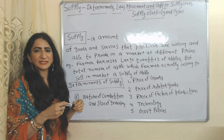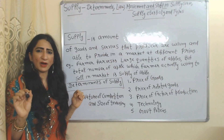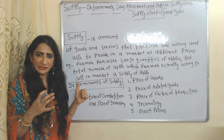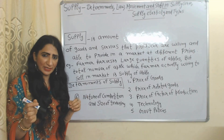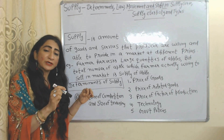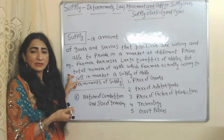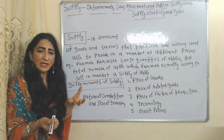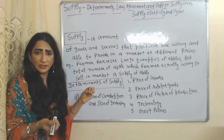Hello everyone, my name is Minnie Sati. Today we are going to talk about everything about supply. Supply is the amount of goods and services that a producer is willing and able to provide in the market at different prices. For example, farmers harvest large quantities of apples, but the amount of apples they are actually willing and able to sell in the market will be called the supply of apples.